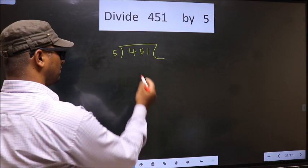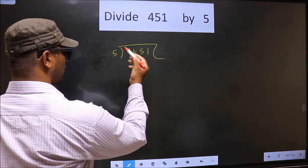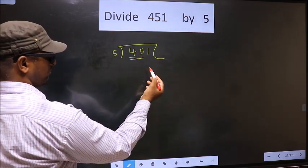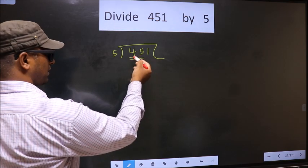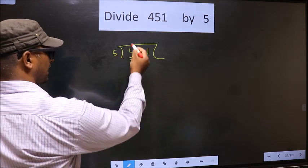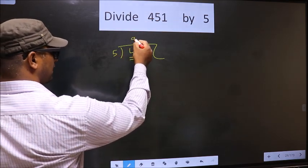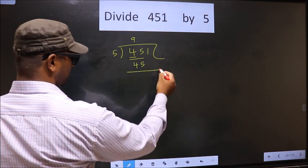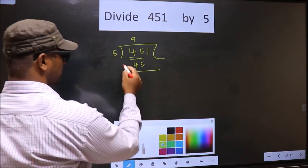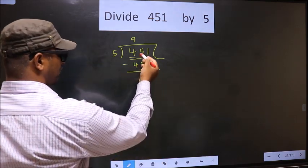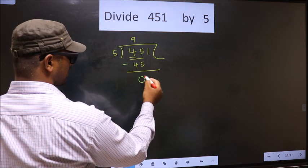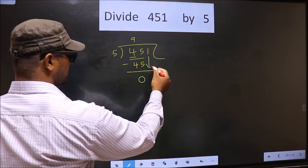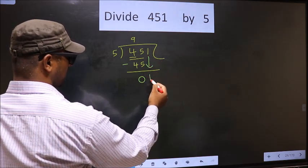Now here we have 4. 4 is smaller than 5, so we take two numbers, that is 45. When do we get 45 in the 5 table? 5 nines, 45. Now you subtract — 45 minus 45 is 0. Now we bring down the beside number, that is 1.